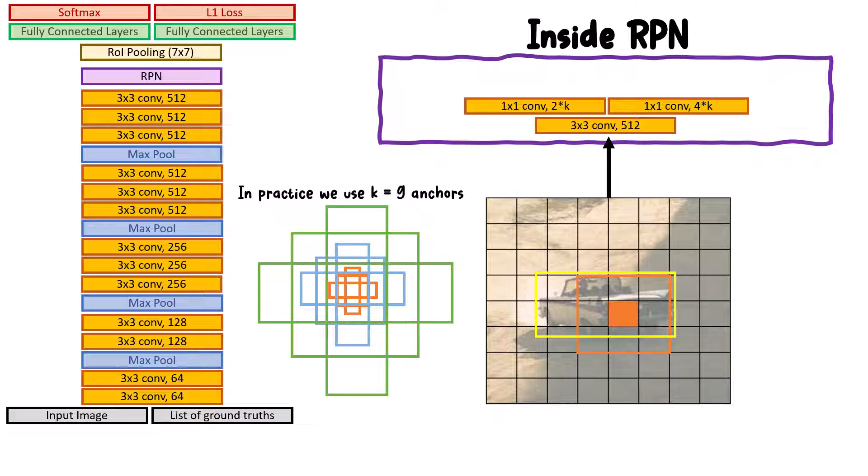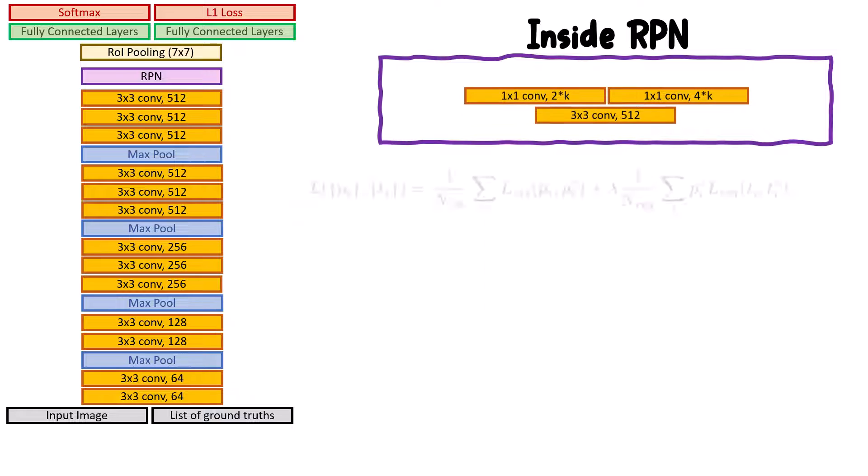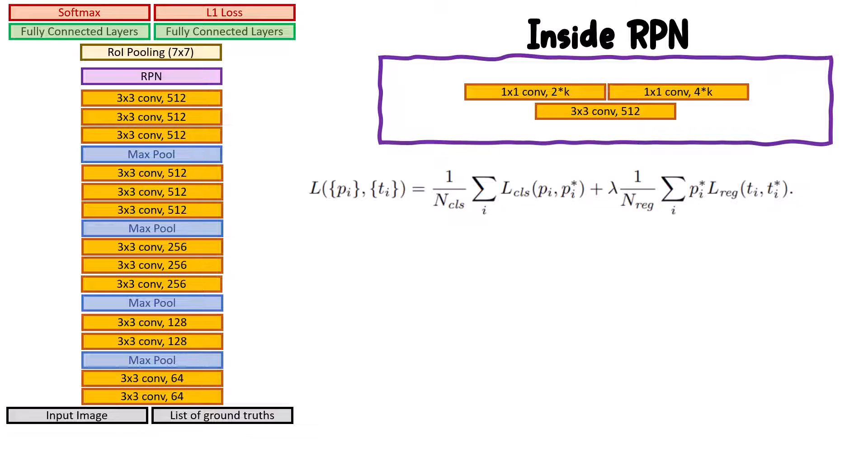From now on, we'll be more specific by understanding the loss function for RPN and how to train such a model. The loss function for RPN has this formula. It's a multitask loss because we have to compute loss per classification, which is just being an object or not, and regression for the modification of the anchor box to cover the object.